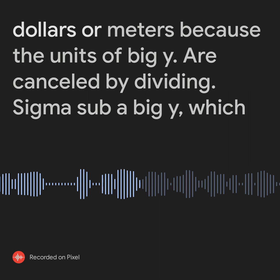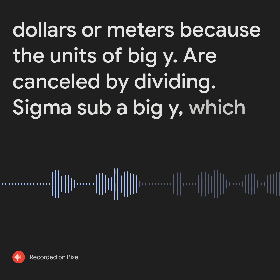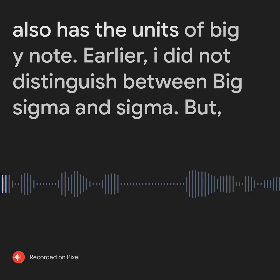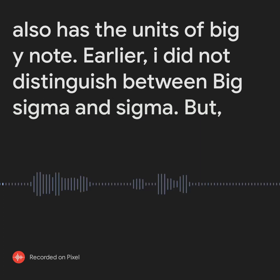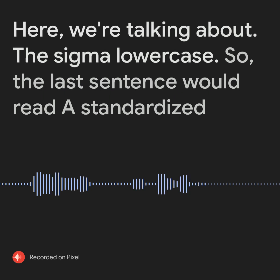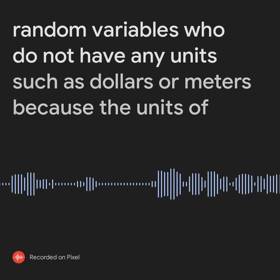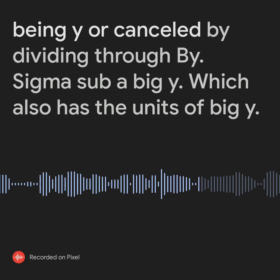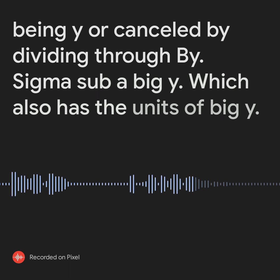Standardized random variables do not have any units, such as dollars or meters, because the units of Y are canceled by dividing through by σ_Y, which also has the units of Y.